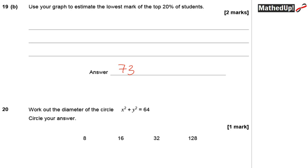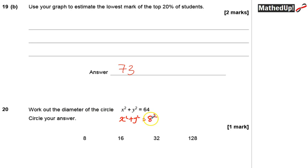Question 20: work out the diameter of the circle x² plus y² equals 64. Writing this as x² plus y² equals r², I can see that r² equals 64, which is 8 squared, so the radius is 8. The diameter is 2 times the radius, which is 16.